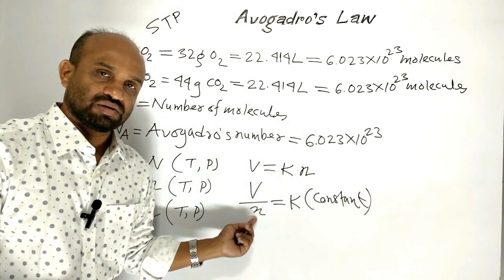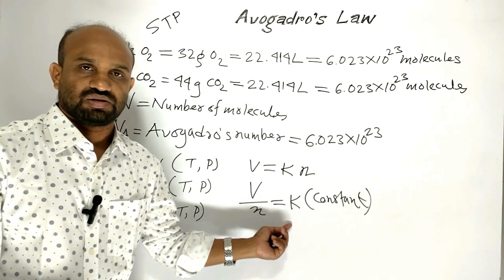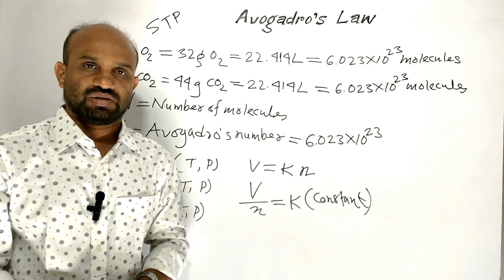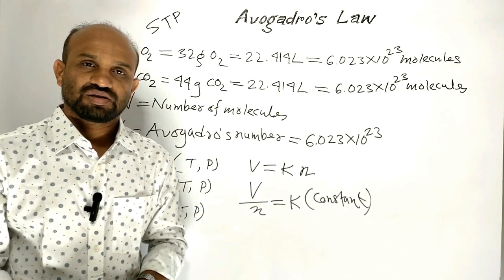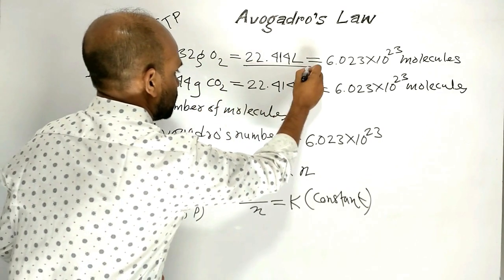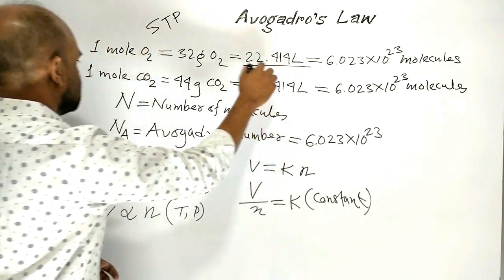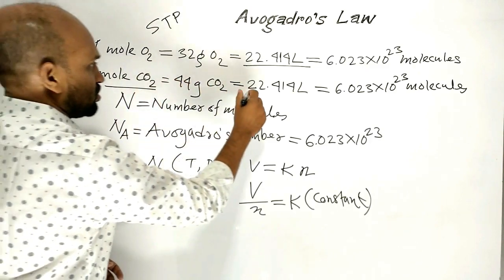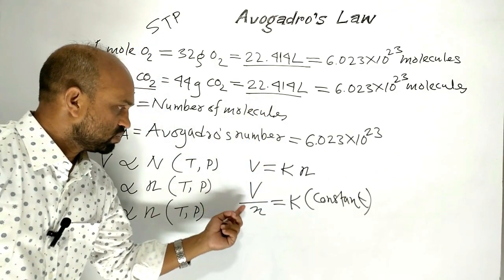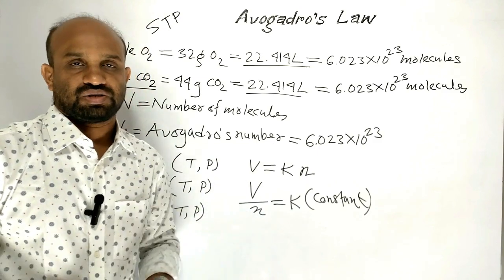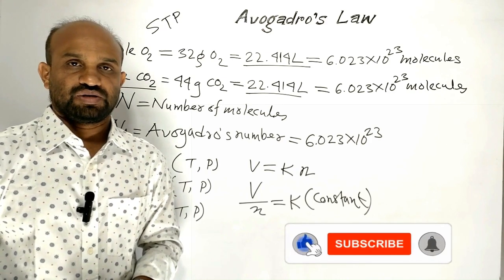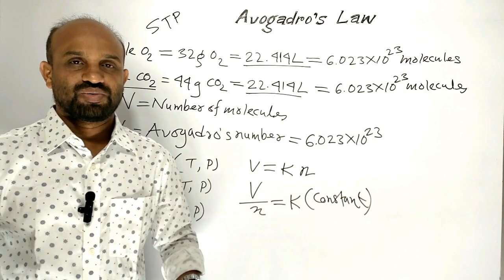Volume per mole of gas is constant. That is, one mole of any gas will have a constant volume. One mole of oxygen has a volume of 22.414 liters; one mole of carbon dioxide also has a volume of 22.414 liters. So, volume per mole of gas is constant — that is, 22.414 liters at STP. This is all about Avogadro's Law. Thank you very much.